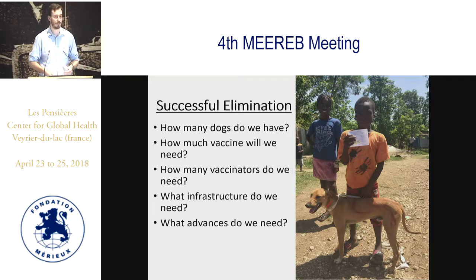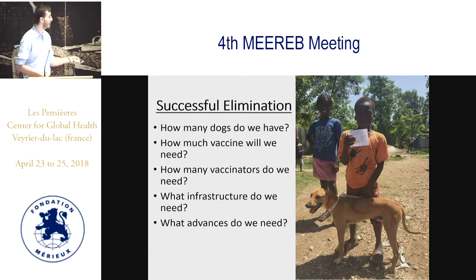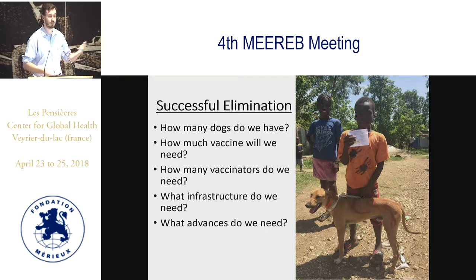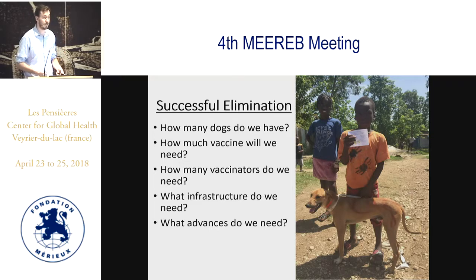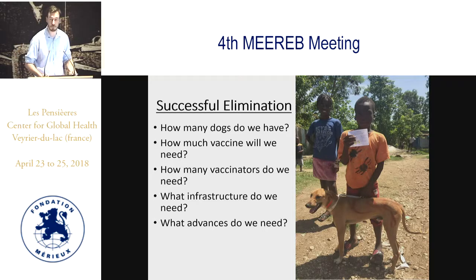Do we have enough vaccinators to do this? So we know we need to vaccinate, say, 500,000 dogs — who's going to do that? That can't be the job of two or three people, so you need to have the human resources as well. What infrastructure do we need? This includes vehicles, means to get those vaccinators to those animals, syringes, fuel — all that information that often is forgotten or left to the side and then poses a problem when you actually want to begin implementing these vaccination campaigns. So what advances, technology, or support do we then need to do this?